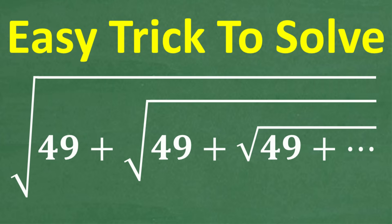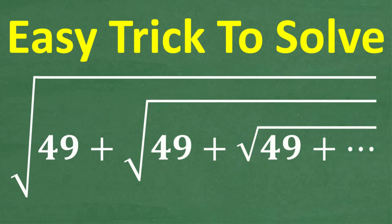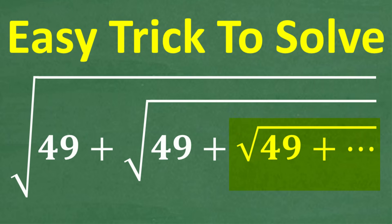We have the square root of 49 plus the square root of 49 underneath this big square root, plus the square root of 49 underneath this square root. This pattern continues on indefinitely — it doesn't stop. But we can actually calculate the sum total of this entire expression.